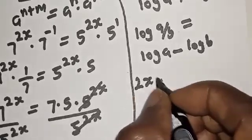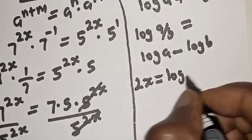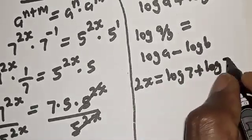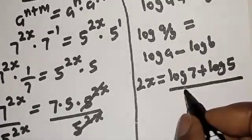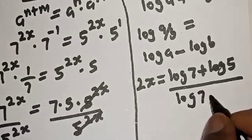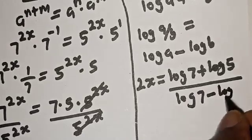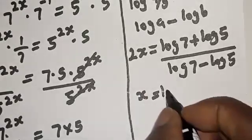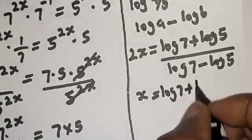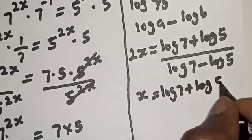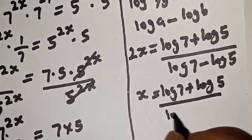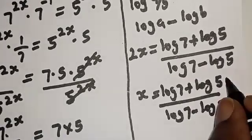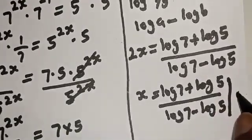So, 2s is equal to log 7 plus log 5 over log 7 minus log 5. So s is equal to log 7 plus log 5 over log 7 minus log 5, everything over 2.